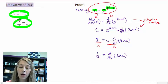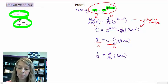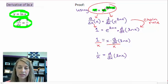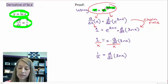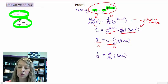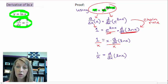We know on the left-hand side the derivative of x is equal to 1. On the right-hand side we apply the chain rule. We have e to the natural log of x, so the derivative of the outside is e to the natural log of x times the derivative of the inside. The derivative of the inside is what we're trying to solve for.